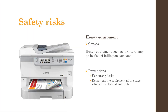Heavy equipment can also be dangerous at times. For example, there is a risk that a heavy printer will fall on someone. However, these situations can be prevented by using strong desks to support the equipment and by placing it in the middle, as the risk of it falling is higher if it is placed in the corner.